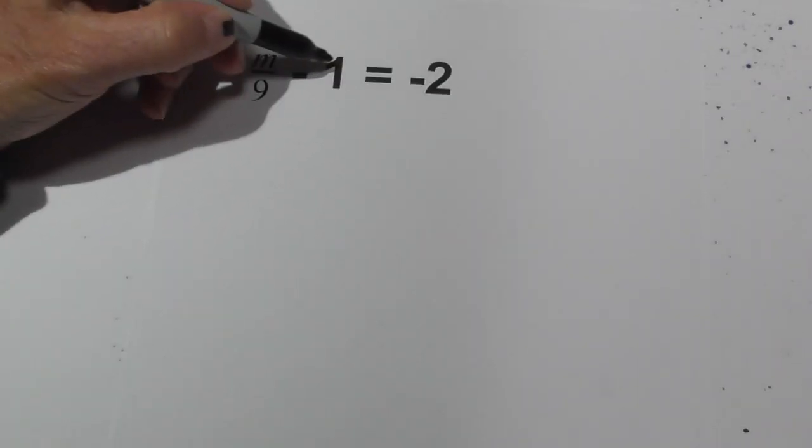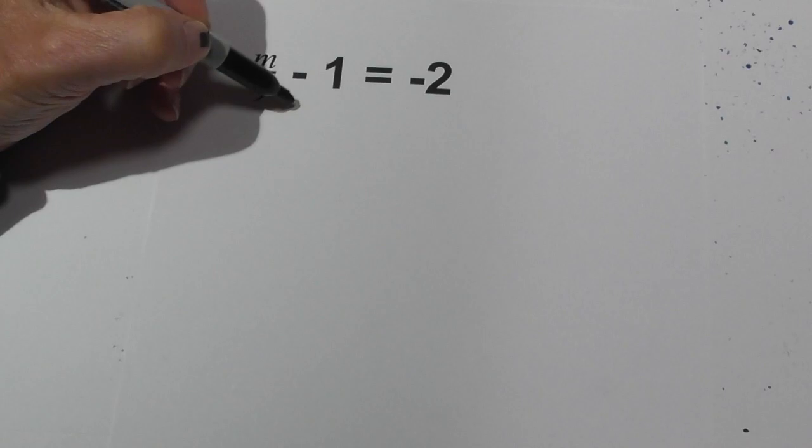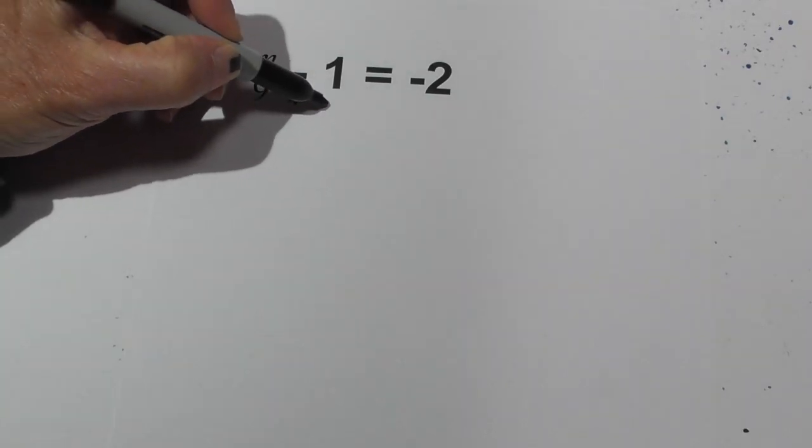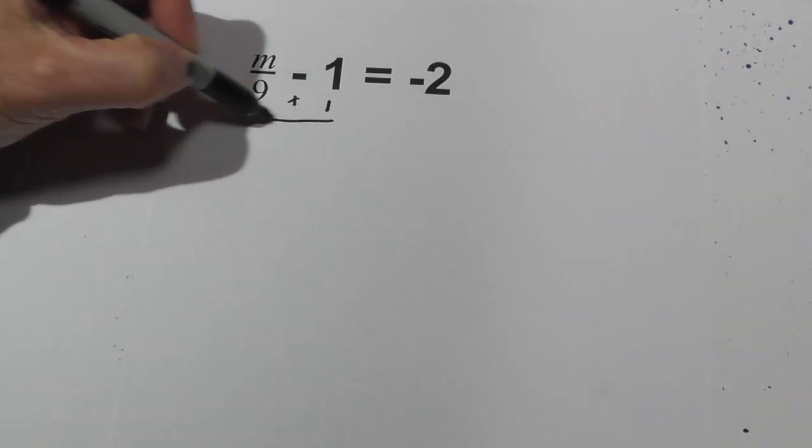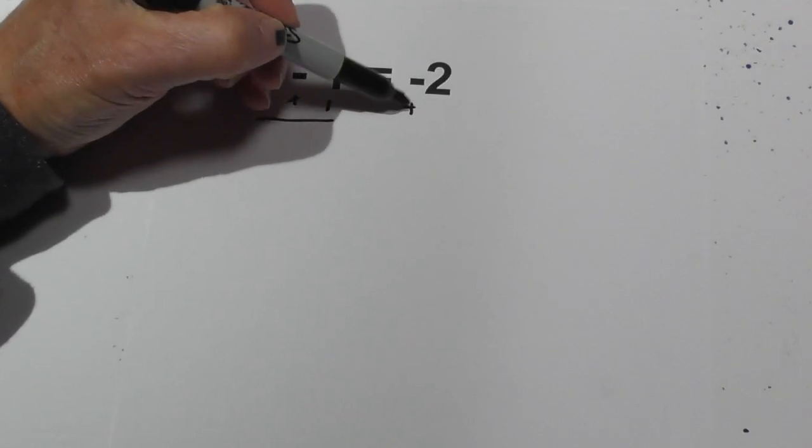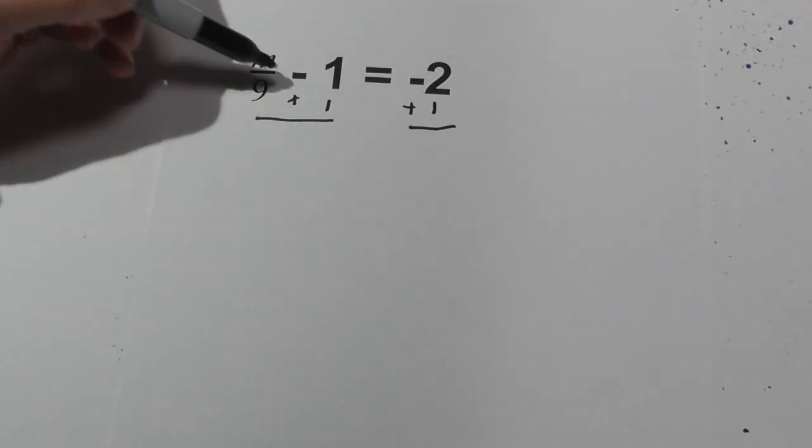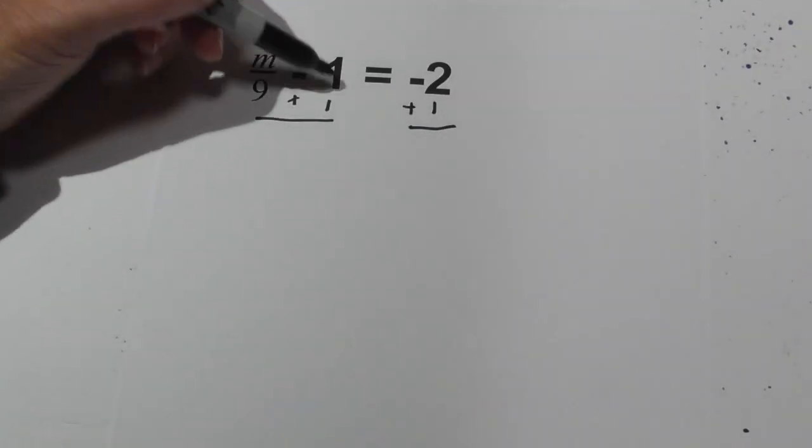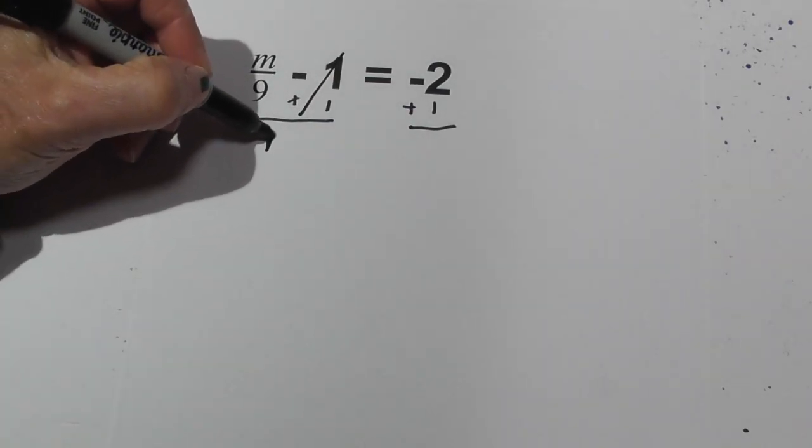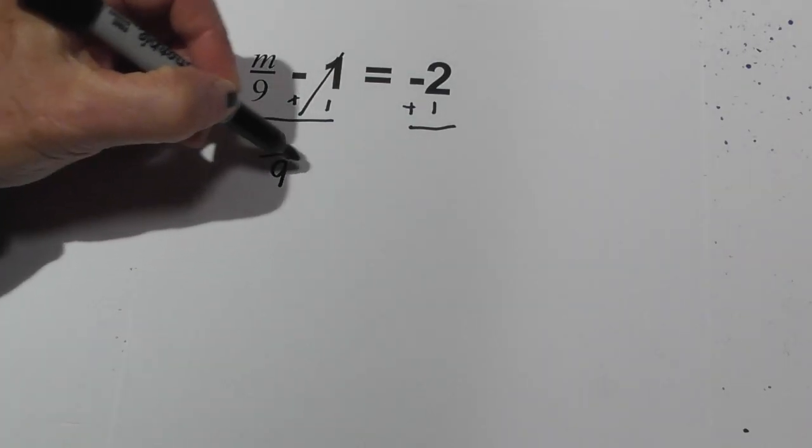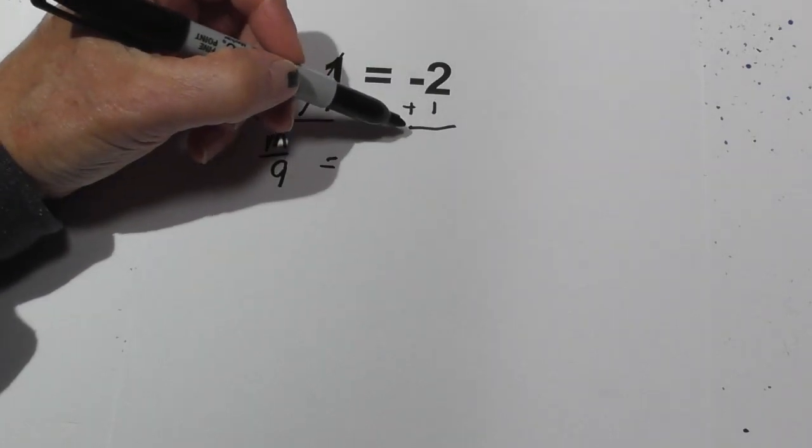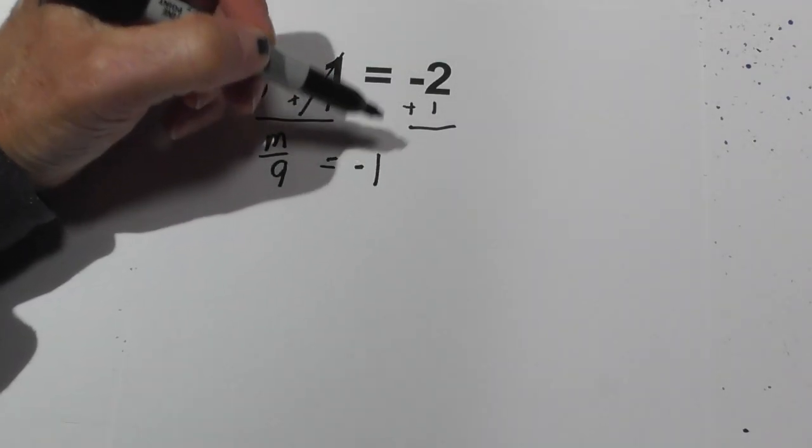Let's do the reverse operation of negative 1. Add 1 to move the 1 to the other side. What you do to one side of the equation you must do to the other. Negative 1 and positive 1 cancel. So I'll bring down m over 9 equals negative 2 plus 1, which is negative 1, because a negative and a positive is like subtraction.